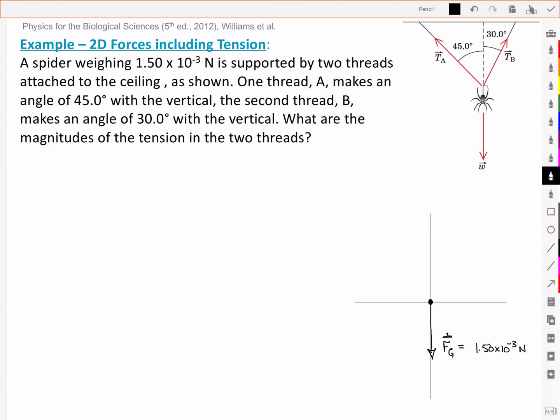It's acting downwards and if I define this as my positive y and my positive x, that's going to make this a negative 1.5 times 10 to the negative 3 newtons. I then have a tension acting at 30 degrees and this is my Tb.